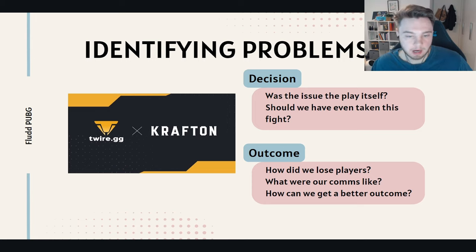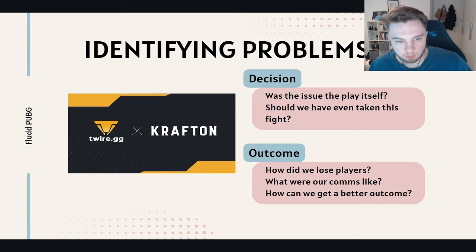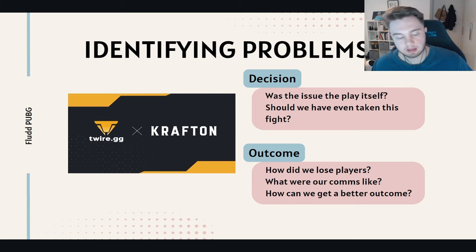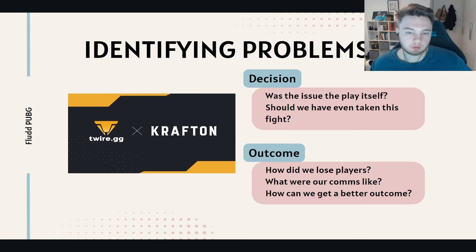We can identify the outcome — how did we lose players, what were our comms like, the micro things that affected it. By splitting this up, we can analyze our games a lot deeper instead of just focusing on how we died. If we only focus on how we died, we'll never learn when to take fights, when to take compounds, when to scale. That tunneled focus on micro leads to arguments, like 'why did you die?' when maybe we shouldn't have taken the fight at all.